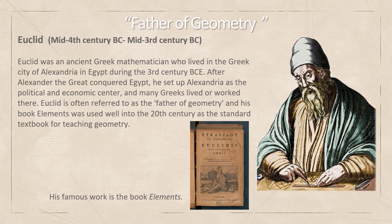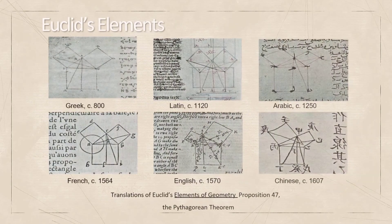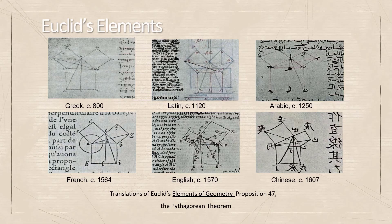Euclid was an ancient Greek mathematician who lived in Alexandria in Egypt during the 3rd century BC. He is referred to as the father of geometry, and his book Elements was used well into the 20th century as the standard textbook for teaching geometry. Shown here are translations of Euclid's Elements in Latin, Arabic, French, English, and Chinese — it was originally written in Greek.